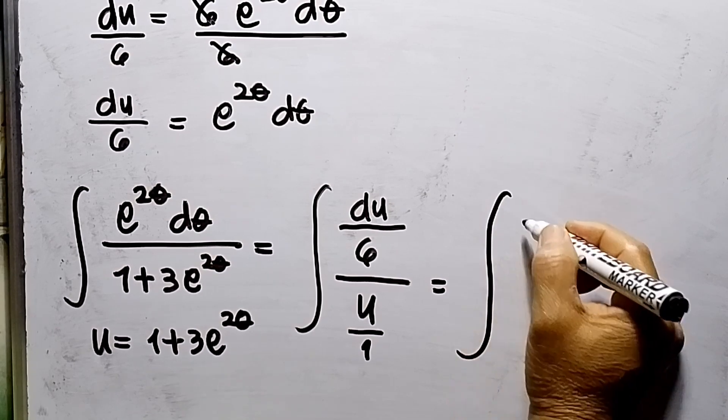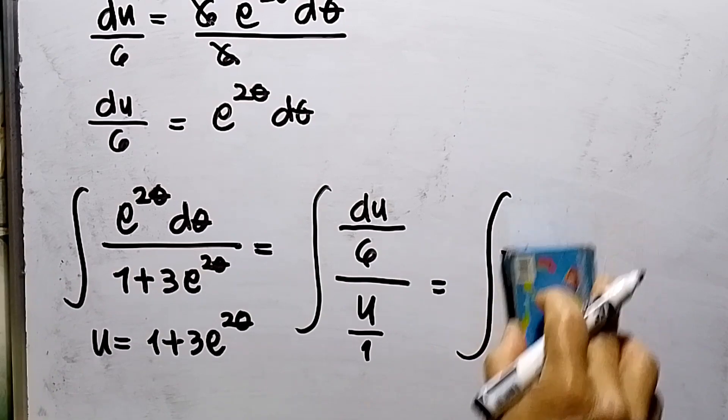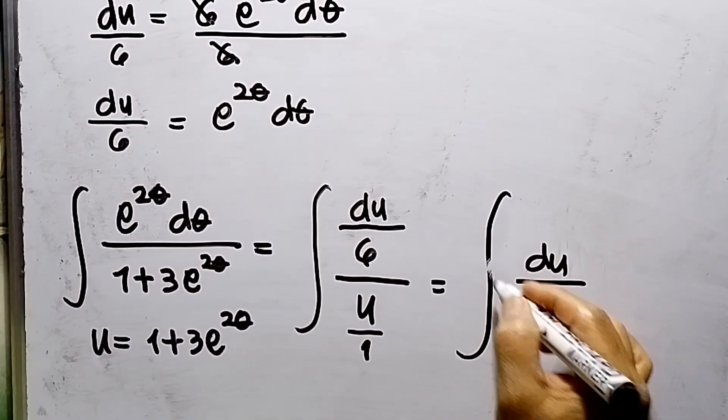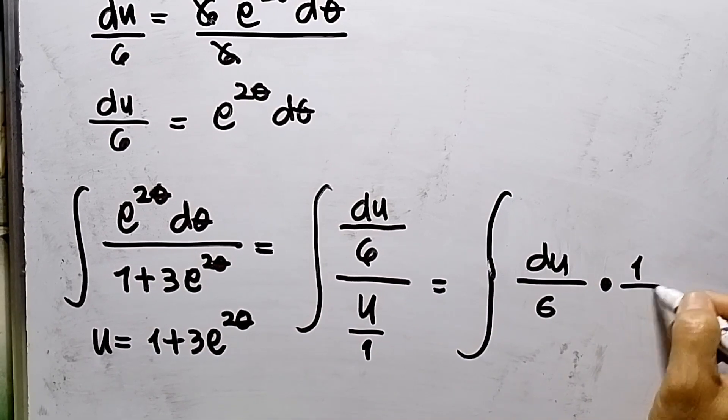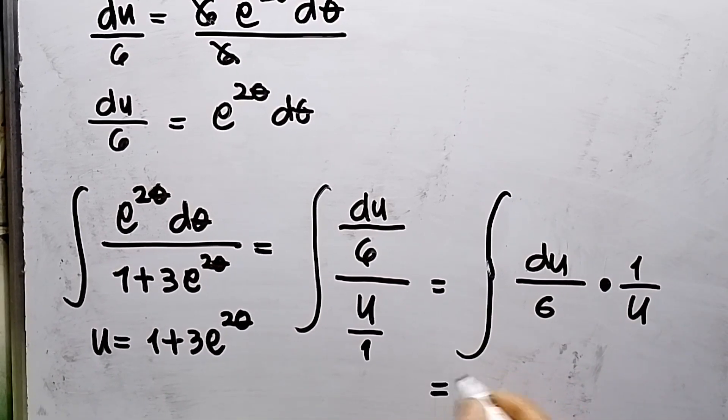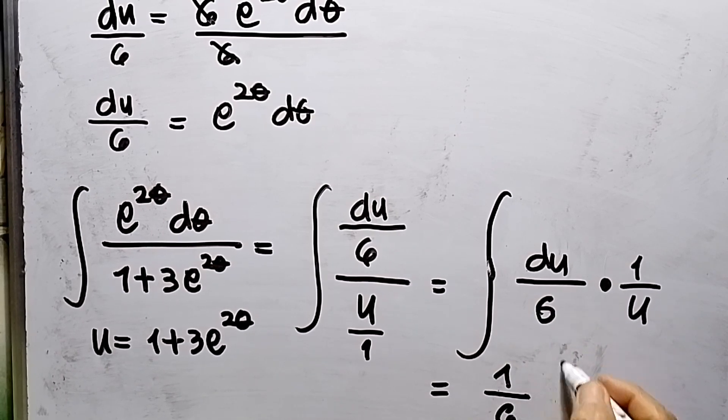du over 6 times reciprocal 1 over u. Then this is constant, so this will be 1 over 6 integral of du over u.